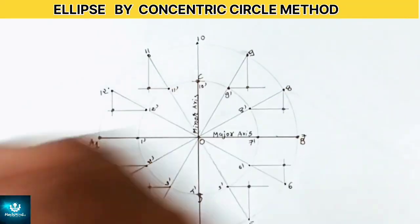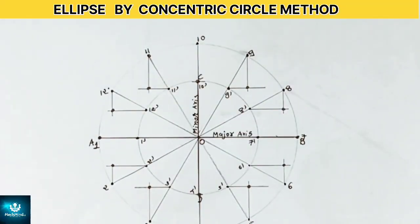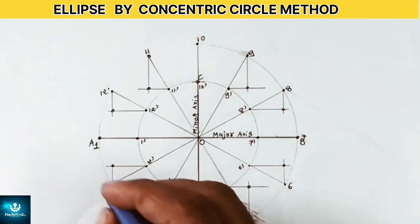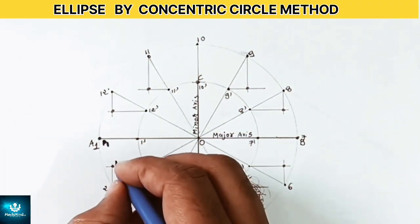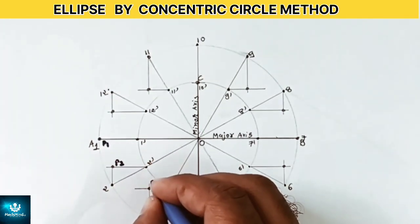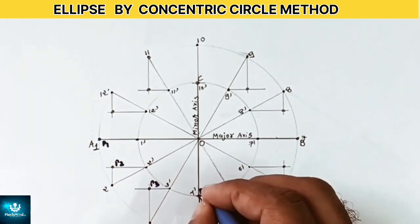These intersection points will help us in the next step of constructing the required curves. So name these intersection points as P1, P2, P3 up to P12.